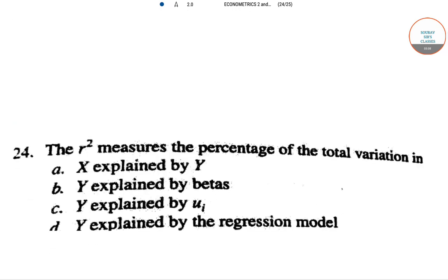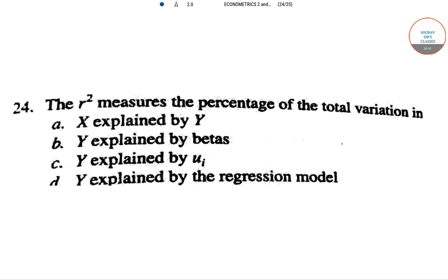Next: R² measures the percentage of total variation. Does it measure variation in X explained by Y? No. Y explained by betas? Not exactly. Y explained by uᵢ? No, because the Y and uᵢ term is zero. The right answer is: Y explained by the regression model itself.